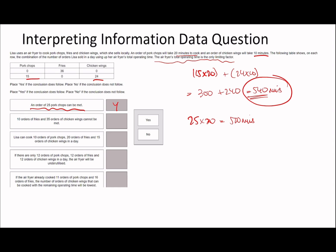The second sub-question says 10 orders of fries and 35 orders of chicken wings cannot be met. But fries don't have a listed time, so we need to figure that out. Looking at the top row: zero pork chops, zero chicken wings, and 36 fries can be made. So 540 divided by 36 is 15 minutes per order of fries. So: fries 15 minutes, pork chops 20 minutes, chicken wings 10 minutes.